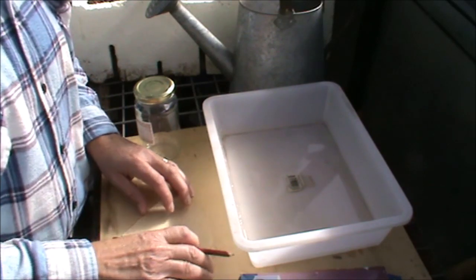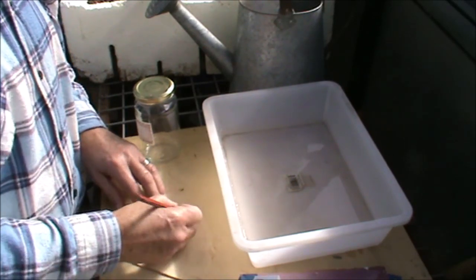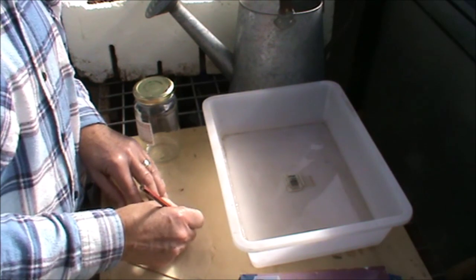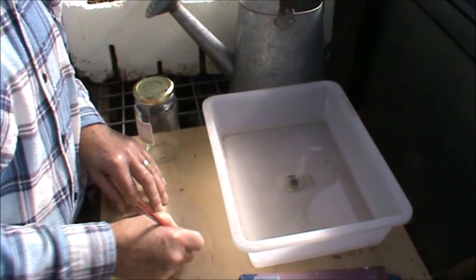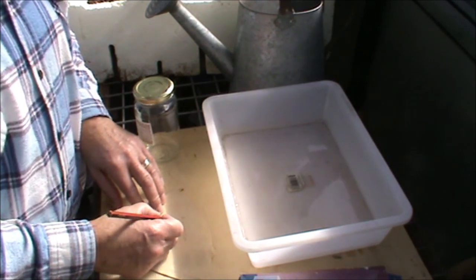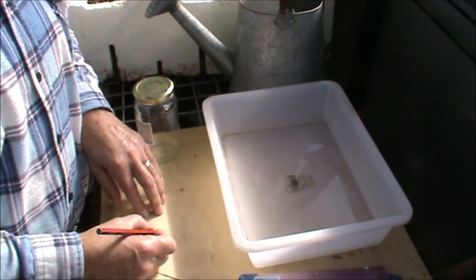All you need to do is write on it the seed that you're germinating. In this case we're going to do cucumber. The variety if it's applicable and the date that it's gone in at.